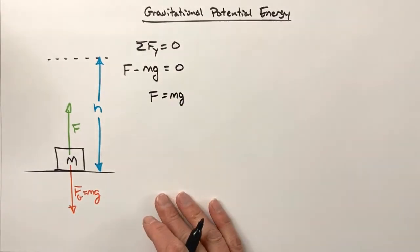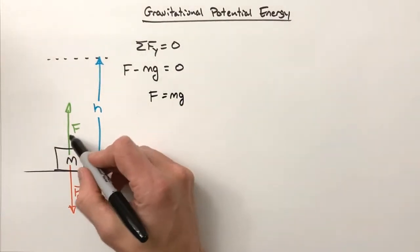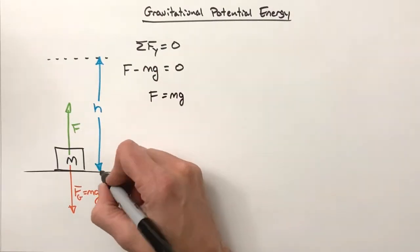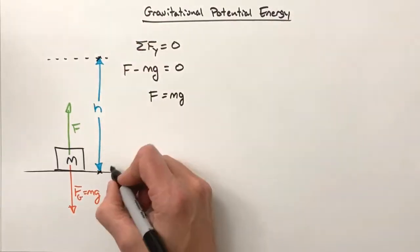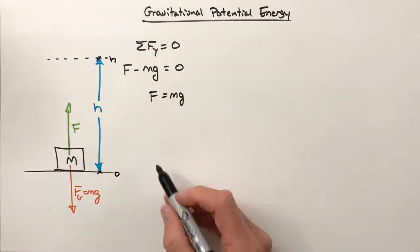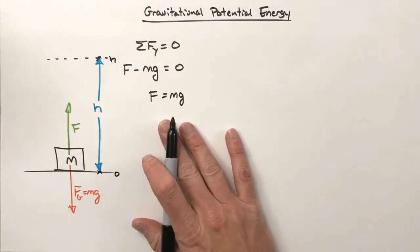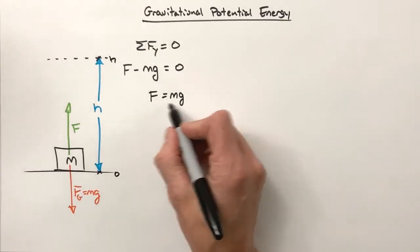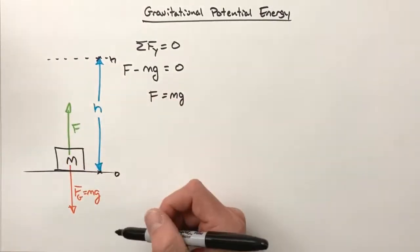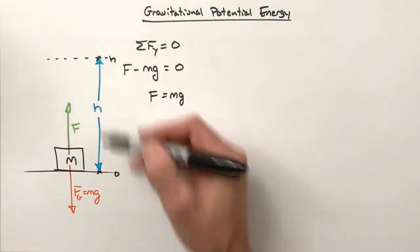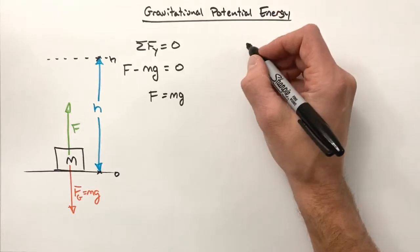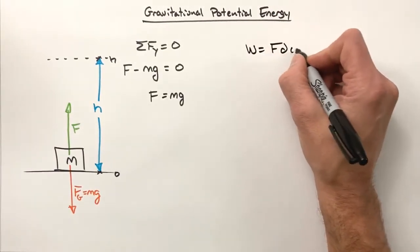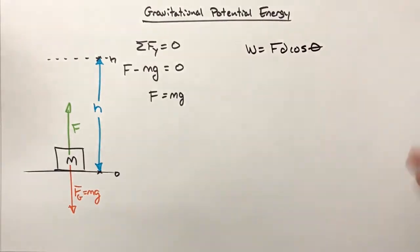So we're going to lift up on this box with some force F over some total displacement - that is, a change in position from a height of zero to some height h. So if I want to look at the work that we do in lifting this box, there's a force that we have to pull upward with on this box and a total displacement.